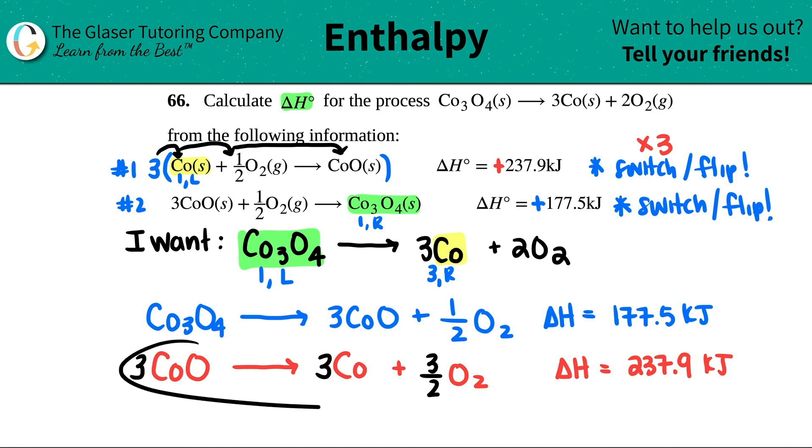Now, if you multiply the equation by three, what do you have to do with the delta H? Yeah, you also got to times it by three. So I'm going to take the 237.9 and times it by three. So 237.9 times three, I get now 713.7. So I'm going to erase this and I'm going to put 713.7.